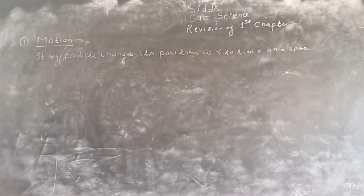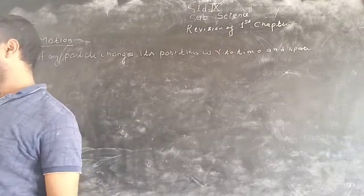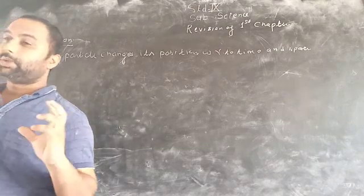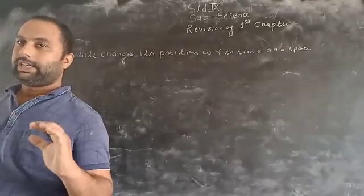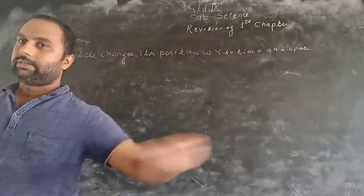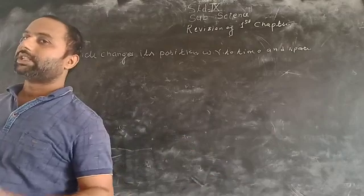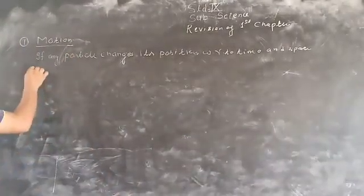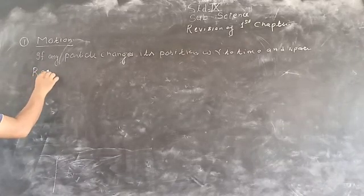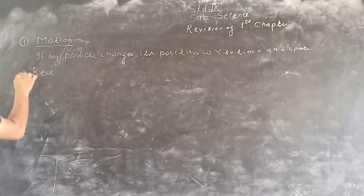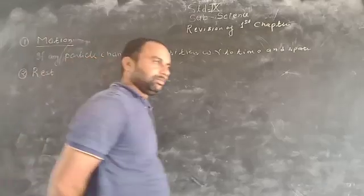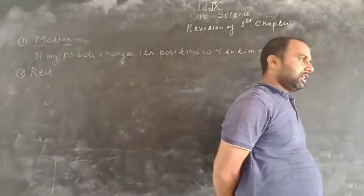Otherwise the particle is not in motion. We say that if any particle is continuously in motion, it means it is in a motion condition; otherwise it is at rest. The second definition is: what is rest? Now how can we define rest?